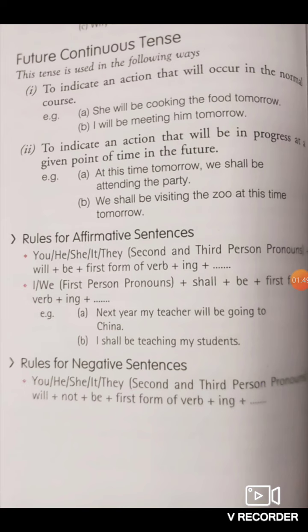The second use is to indicate an action that will be in progress at a given point of time in the future. For example: 'At this time tomorrow, we shall be attending the party.' Another example: 'Tomorrow or day after tomorrow, I will be giving you the exercise of the future tense.' So this indicates an action that will be in progress at a specific future point in time.